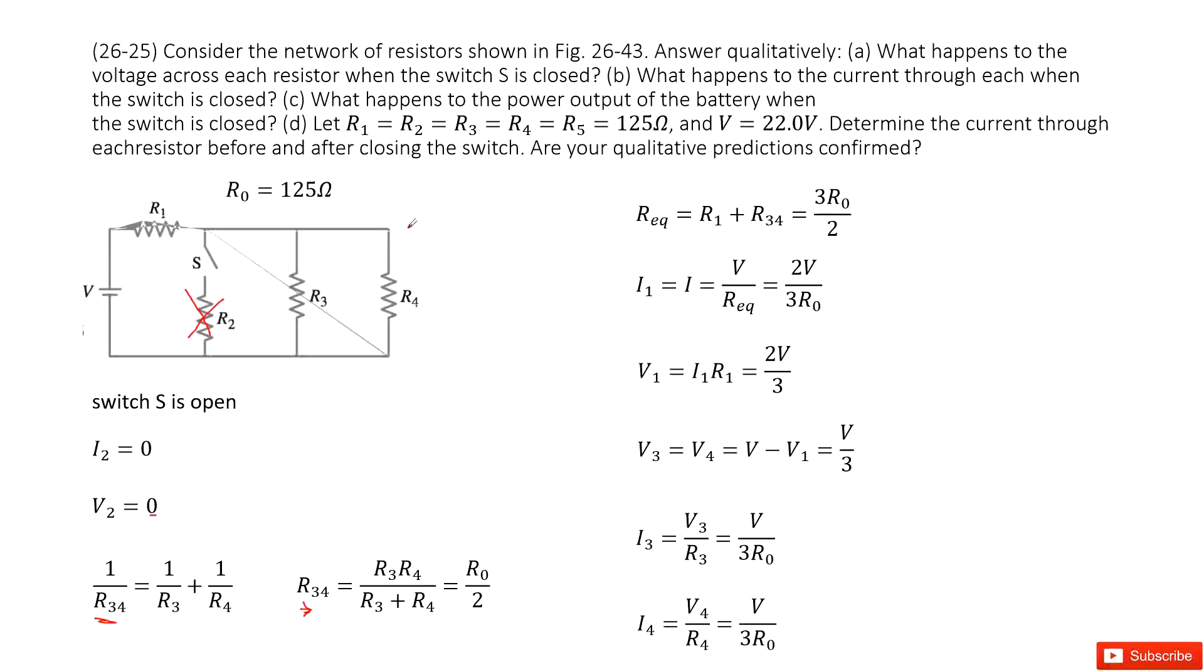The equivalent resistance when switch is open is R1 plus R34 equal to 3R0 over 2. Now the current through this circuit equals I1 equals V divided by R equivalent, so that is 2V over 3R0. So V1 is I1 times R1, that is 2V over 3. That makes V3, V4 equal to V over 3, that is V minus V1. The current I3 is V3 over R3, I4 is V4 over R4. This is for switch is open.